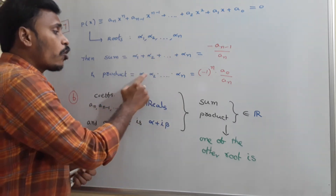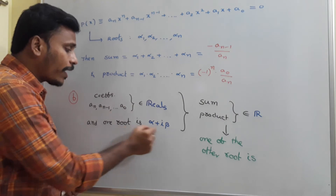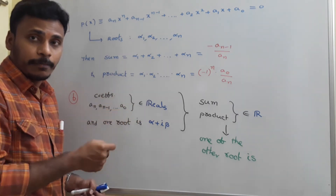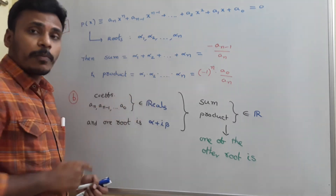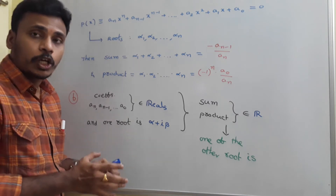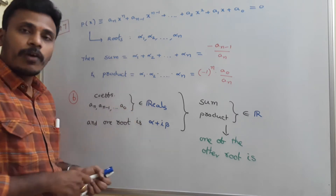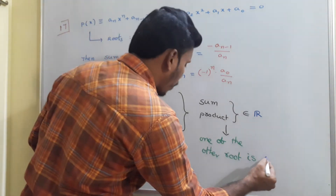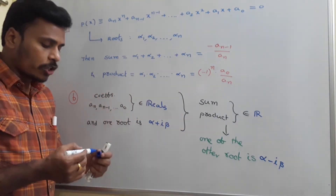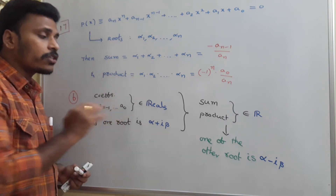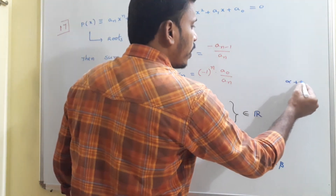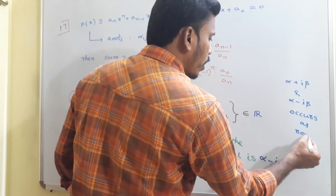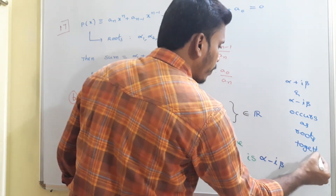The sum of all these n numbers is real and the product of all these n numbers is real. Among these n numbers, one number is α+iβ. Since one number is α+iβ, to get the sum as real, you need to maintain -iβ. Since the product is also real, for sure we need α-iβ. So the conclusion is: if one root is α+iβ and the coefficients are real, then to maintain sum and product as real, for sure another root is of the format α-iβ. Therefore, α+iβ and α-iβ occur as roots together.